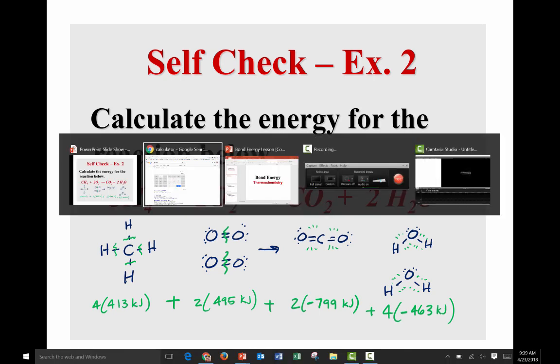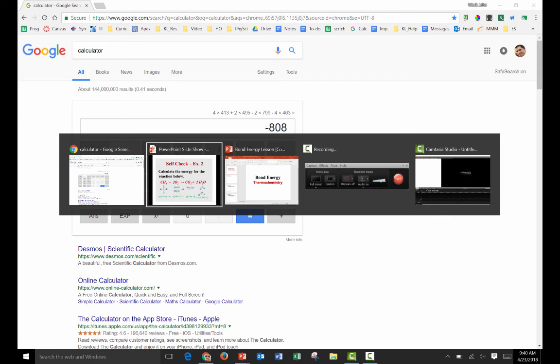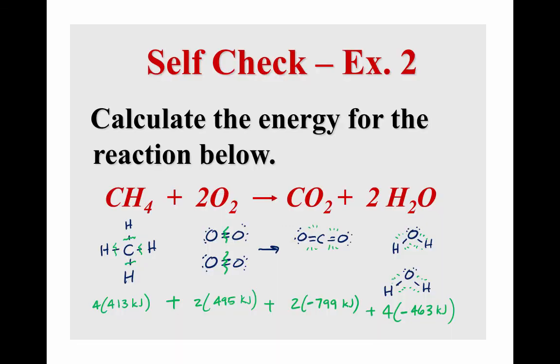All right, so I'm going to get out my calculator now. We had 4 times 413 plus 2 times 495 minus 2 times 799 minus 4 times 463. And it looks like the final answer here is 808, 808 kilojoules. It's got a negative sign on it. So I will record that as my final answer. We could say then that delta H equals minus 808 kilojoules per mole.